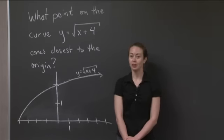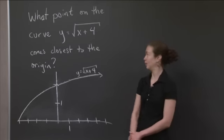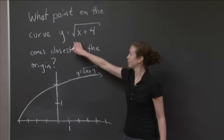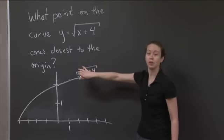Welcome back to recitation. Today we're going to work on an optimization problem. The question I want us to answer is what point on the curve y equals square root of x plus 4 comes closest to the origin?